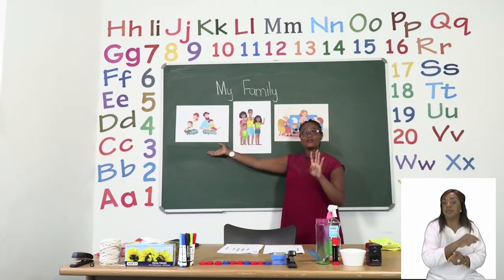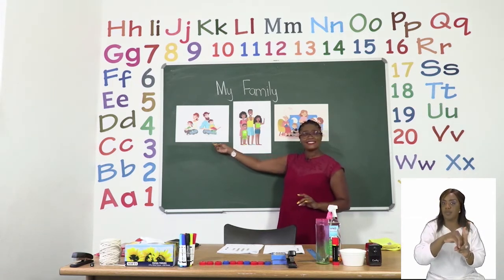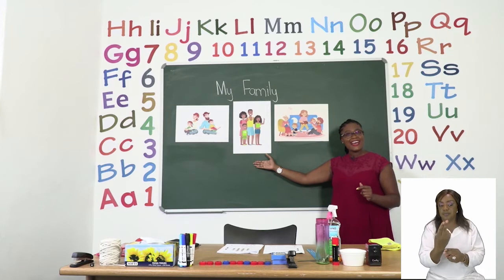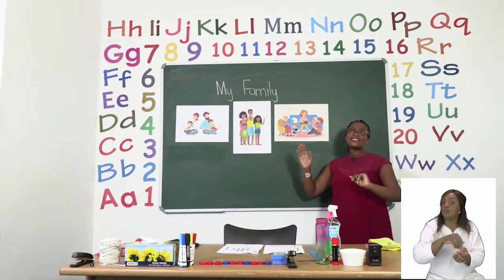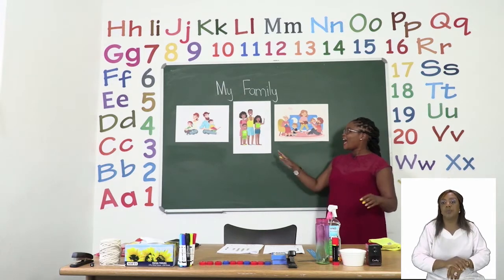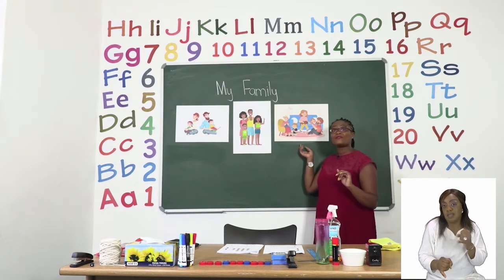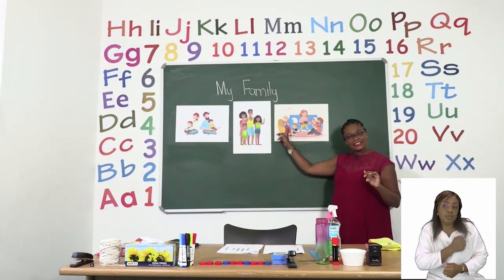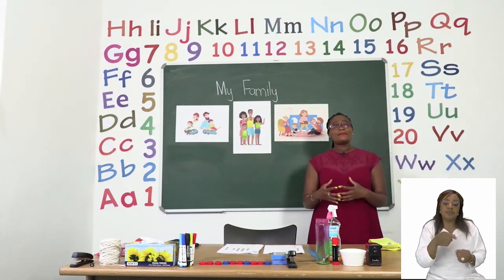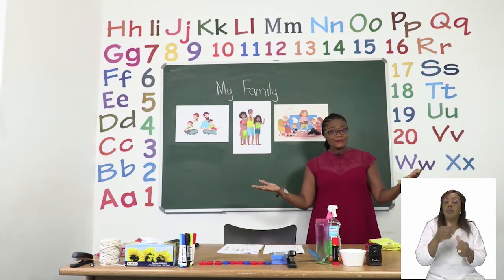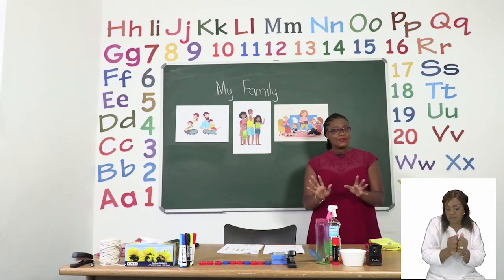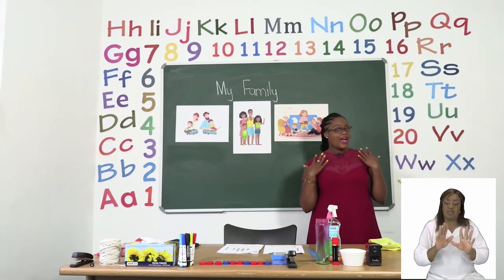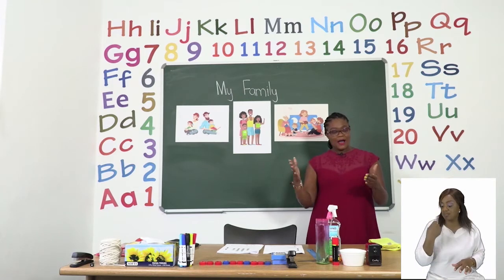Let us take a look at the board. On the board I have three different types of families. In this family you can see there are four people sitting, reading, and smiling — that could be your family. On this one we have a family that is standing, even waving to us. Hello! And in this one we have a family with an extra member. When you are drawing your family, draw the people that you live with — it can be extended family or immediate family. Draw them nicely.